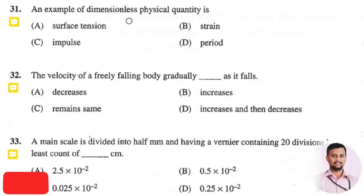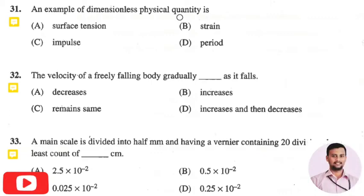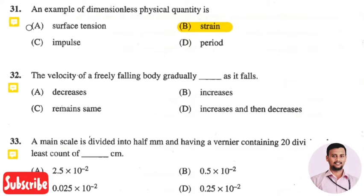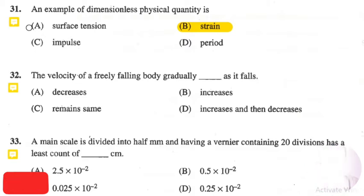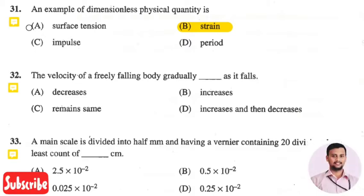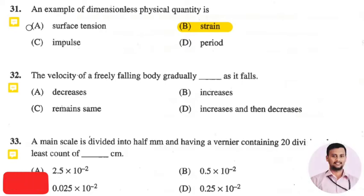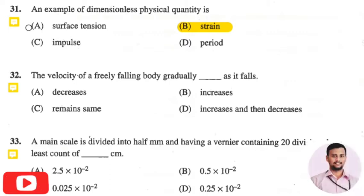The next question is: an example of a dimensionless physical quantity is — the right answer is option two: strain. Strain is defined as change in length divided by original length. Since both change in length and original length are in meters, the numerator and denominator have the same dimension, so they cancel out, making strain a dimensionless parameter.